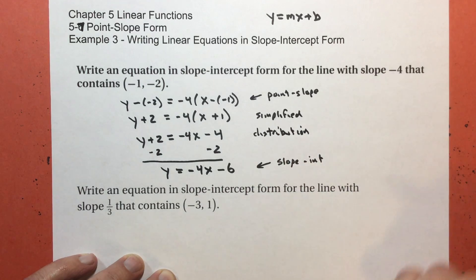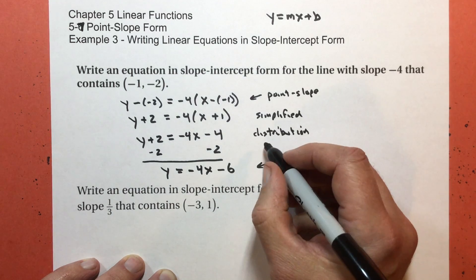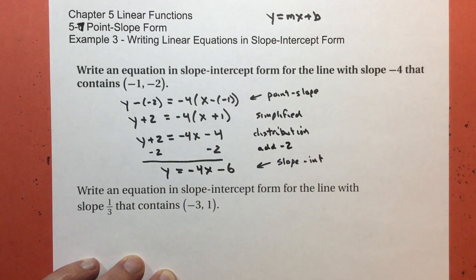Something you've seen in pre-algebra, in the first part of algebra 1 in the 8th grade. And then we added negative 2 to both sides. And that ended up with slope intercept form.